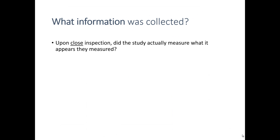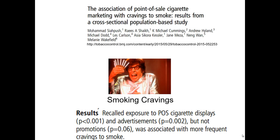The third question we ask when evaluating secondary research studies is what information was collected. When we inspect a secondary study closely, did the study actually measure what it appears they measured? Here's an interesting example from an article called 'The Association of Point-of-Sale Cigarette Marketing with Cravings to Smoke.' This study looked at what induced people to have smoking cravings amongst people who are already smokers.